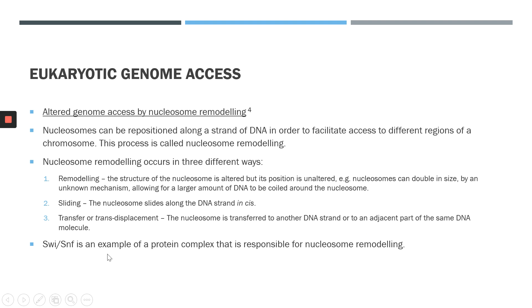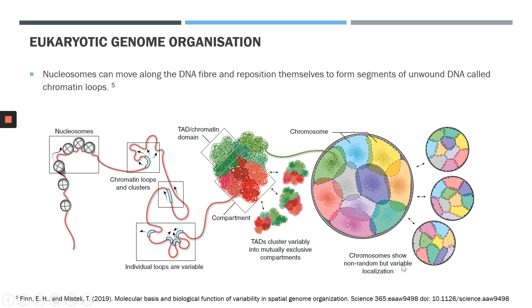The SWI/SNF complex is an example of a protein complex responsible for nucleosome remodeling. Nucleosomes do not shift around along the DNA strand on their own — this process is tightly regulated by complexes of different proteins that interact with the nucleosomes. What happens when nucleosomes shift around is that they release segments of unwound DNA, and these segments are called chromatin loops or clusters.